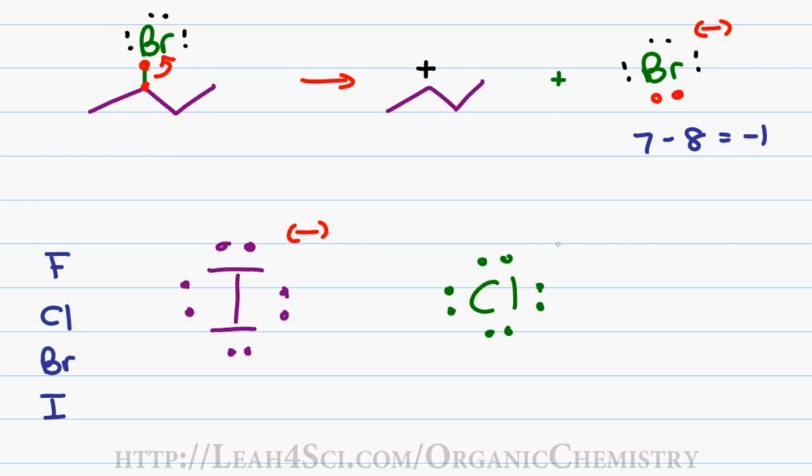Compare this to a negative chlorine or chloride. The atom is smaller, the charge is less distributed or more concentrated making this a little bit more reactive and therefore a little bit less stable. While chlorine is considered an okay leaving group, iodine is considered a very good leaving group because it can hold that negative charge better.